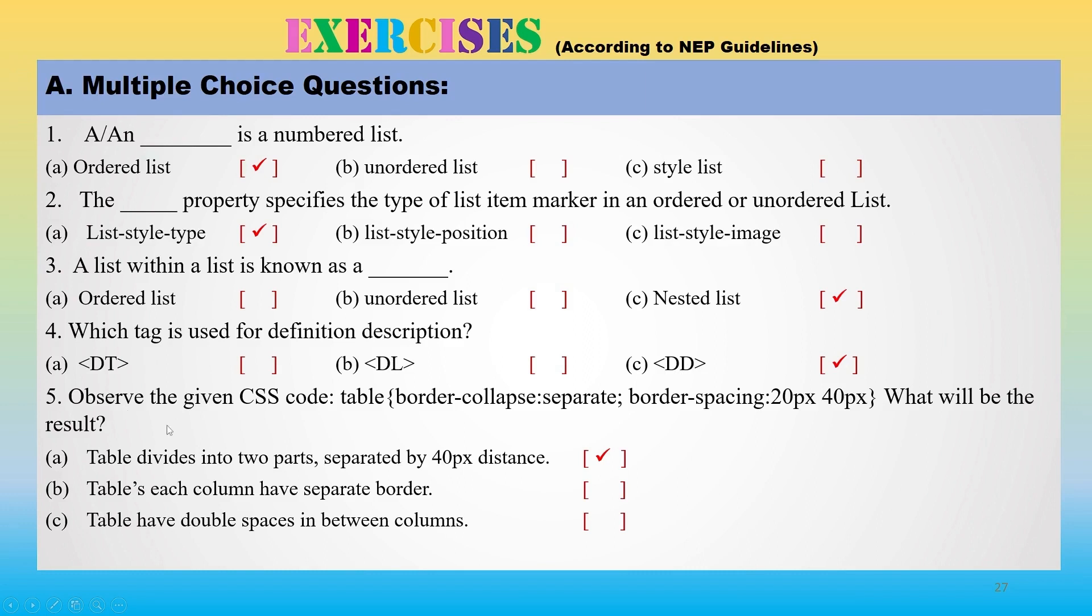Observe the given CSS code: table, border-collapse: separate, border-spacing: 20px 40px. What will be the result? It will divide table into two parts separated by 40 pixels.